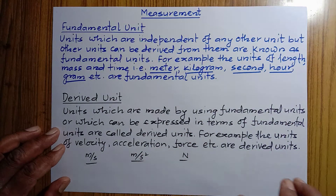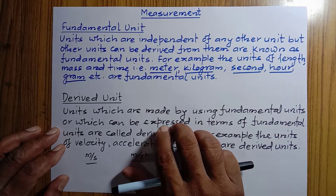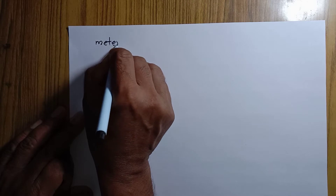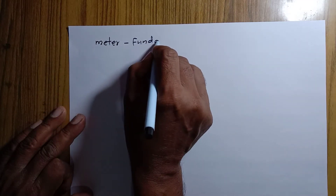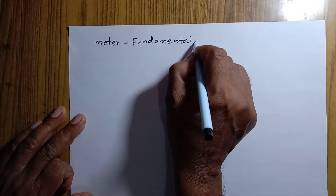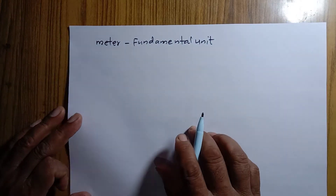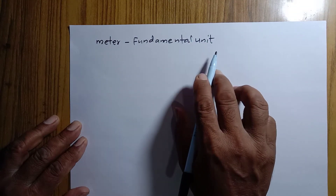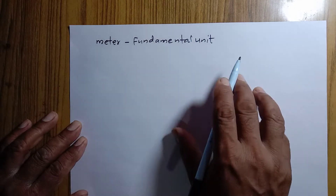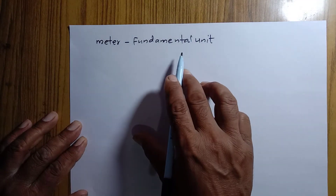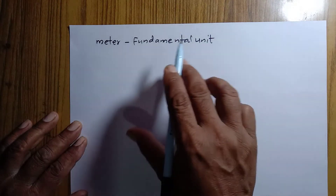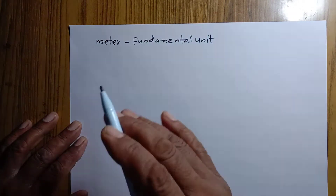Sometimes we have to answer a different type of question — for example, how can you say that meter is a fundamental unit? The answer is: the unit meter is independent. It can neither be changed nor be related to any other unit. Since an independent unit that cannot be derived from other units and cannot be changed or related to other units is called a fundamental unit, therefore meter is a fundamental unit.